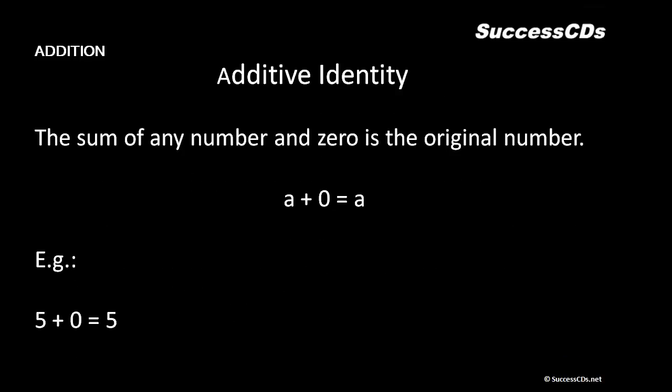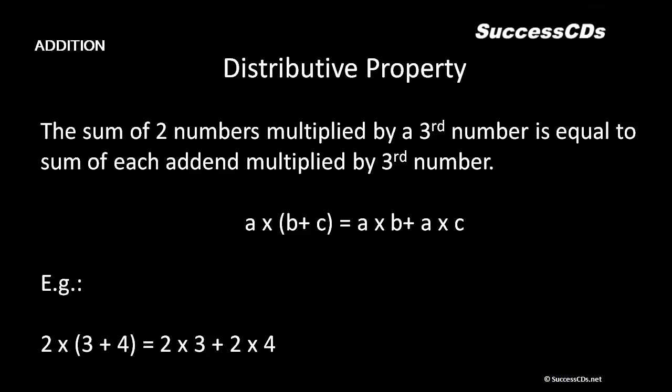Third is the additive identity. The sum of any number and zero is always the original number. That means if I add zero to any number, it will remain the number itself: a plus zero equals a. For example, five plus zero is equal to five.